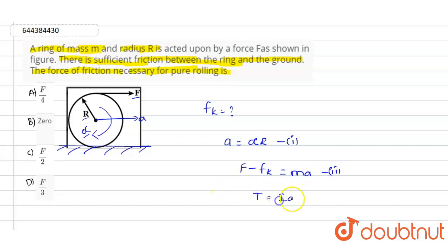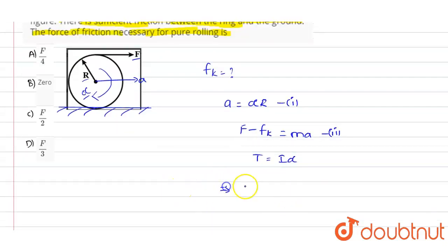And we know capital T will be equals to I into alpha. We can write the equation as F plus fk of radius capital R will be equals to m into R square into alpha. Let us suppose this as equation number three.